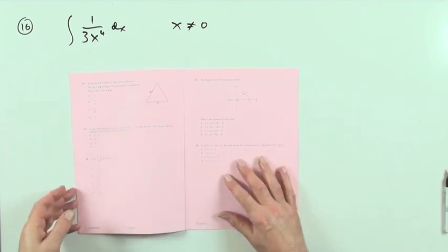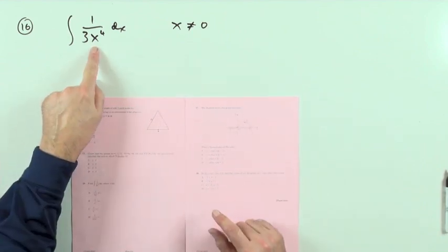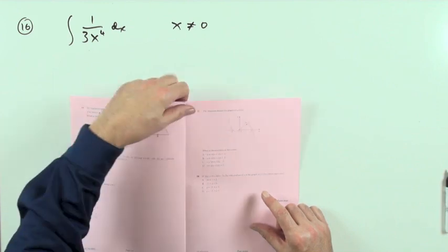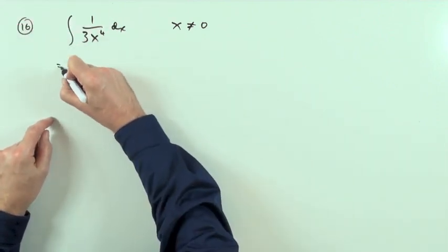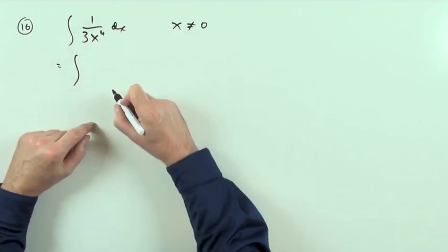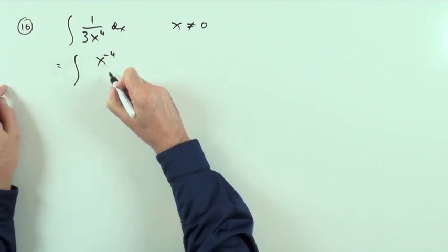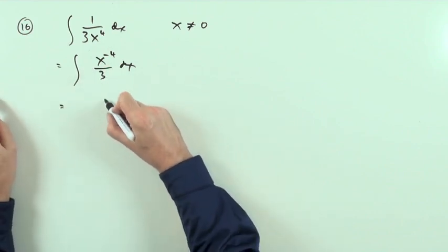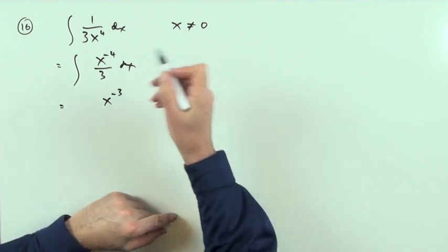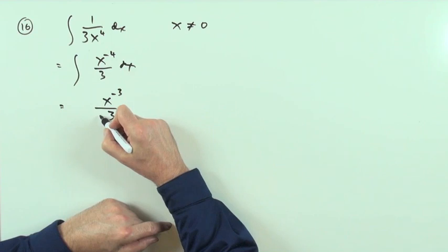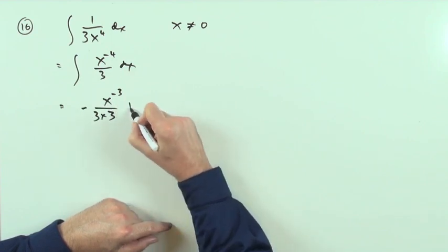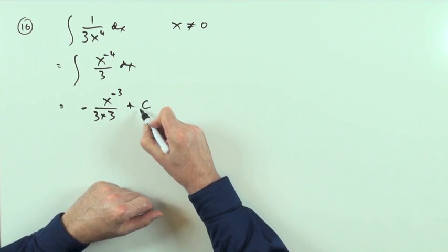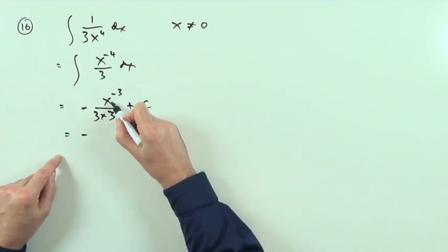Number 16 is an indefinite integral. You need to sort it out first — get x into index form on top. An x to the power 4 underneath is the same as x to the negative 4 on top, and there's a factor of one-third. Integrating: add 1 to the power, giving negative 3, then divide by negative 3 — so there'll be a 9 in the denominator. Don't forget the plus C.